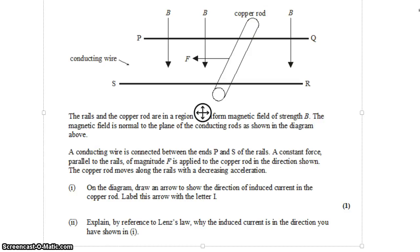We have a conducting wire connected between the ends P and S, and a constant force parallel to the rails of magnitude F is applied to the copper rod in the direction shown. So we're going to pull the copper rod with a constant force. The copper rod moves along the rails with a decreasing acceleration, which is quite interesting. So we have a constant force and a decreasing acceleration.